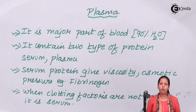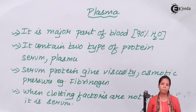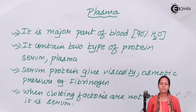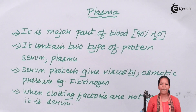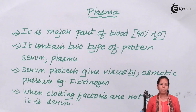If you observe the blood composition, at least 50 to 55 percent, approximately 60 percent, is plasma. This plasma consists of 90 percent water and approximately seven to eight percent plasma proteins.